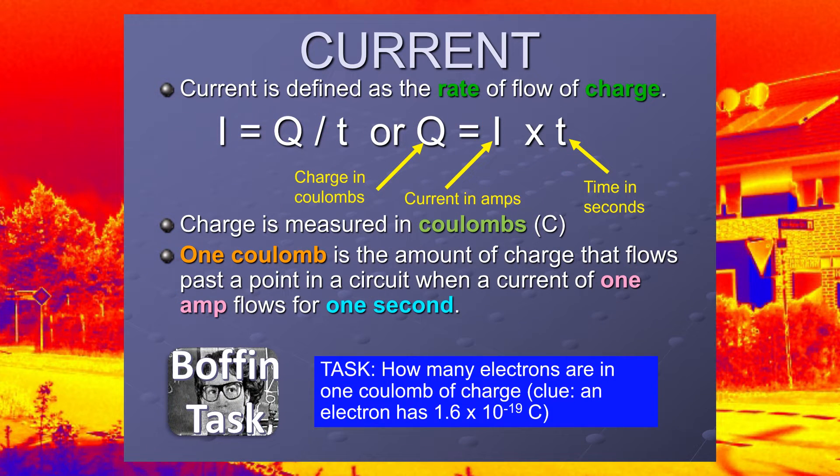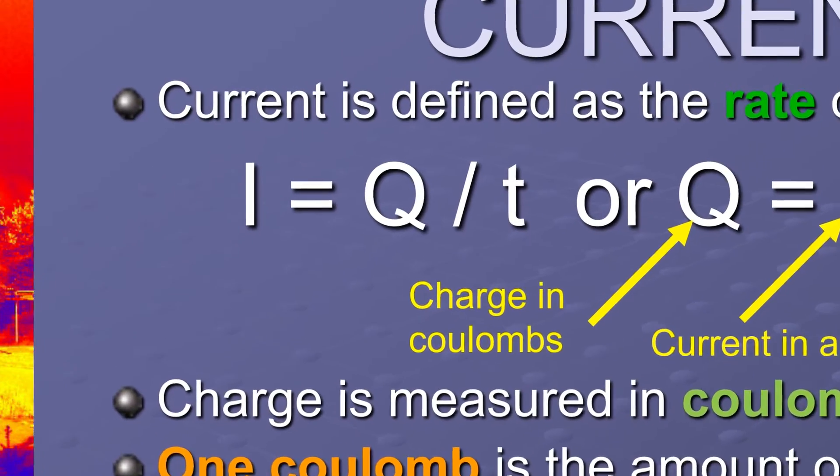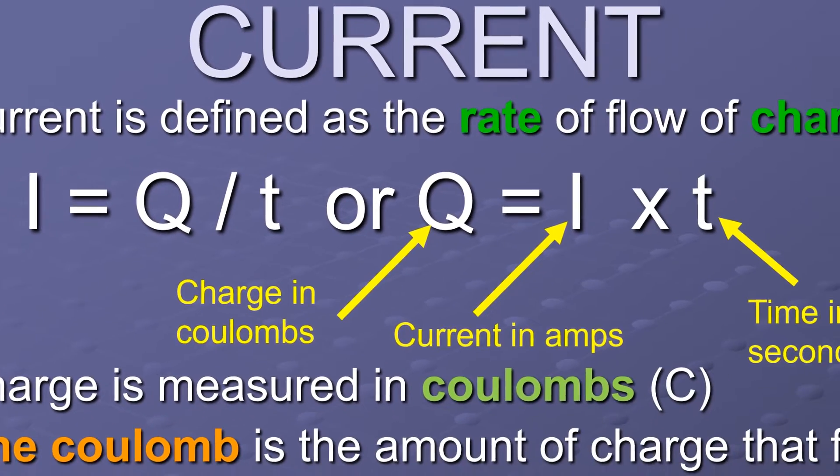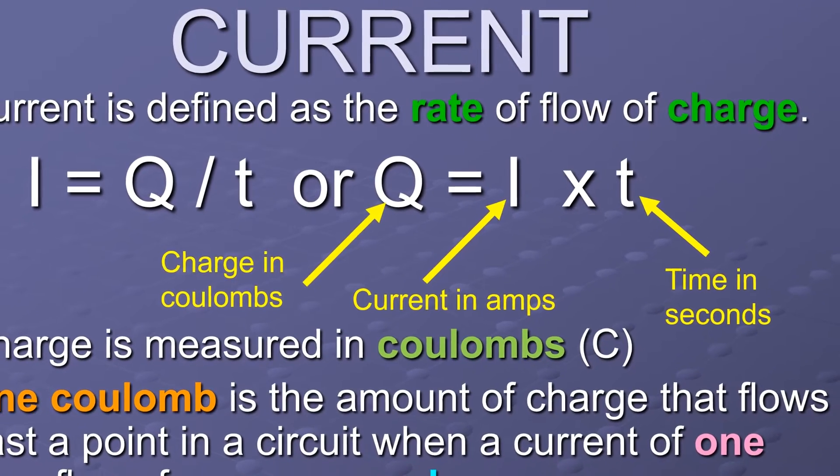So, we've got two versions of the equation. I equals Q over T, which gets across the idea that it's rate of flow of charge. That's what I like. But the exam boards give it to you as Q equals I times T.